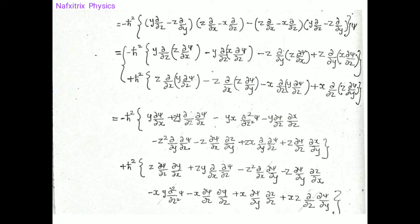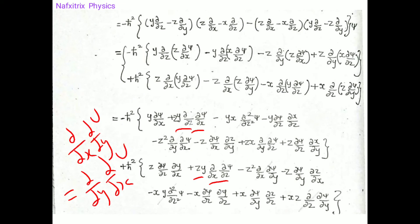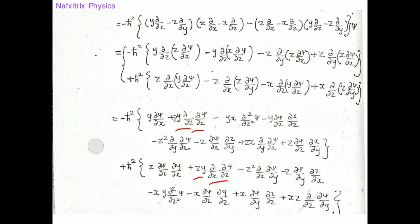Now we have the full expanded expression and we need to cancel terms. We observe that ∂/∂x·(∂/∂y) acting on a wave function equals ∂/∂y·(∂/∂x), since partial derivatives commute. Therefore certain pairs of terms are identical and cancel each other.